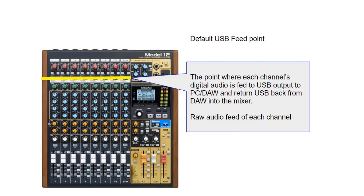The audio source from your microphone, guitar, or synthesizer connected to the Model 12 input flows from the top to the bottom — this is called the channel strip. First it goes to the gain stage where you can use the gain knob to control input gain and the low cut. Then it goes to the merge switch, the compressor, the equalizer, the auxiliary send levels, panning, fader, and finally ends up at the main and/or the sub buses for their output.